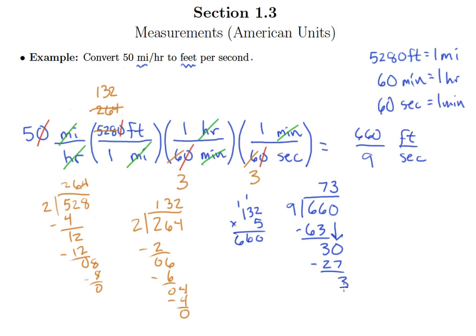Now, if this was a problem where they asked us to round to a certain place value, then at this point we would continue to divide, get a decimal answer, and then round to the appropriate value. But because they did not give us rounding instructions, we can assume that the problem wants us to keep the answer exact. So let's just stop right here and understand that this means that 660 over 9 is equal to 73 and 3 ninths feet per second.